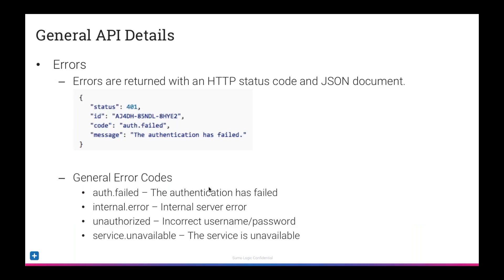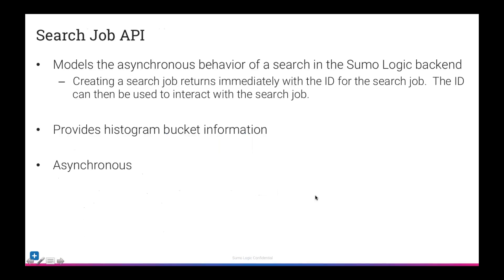Errors are usually returned with an HTTP status code and a JSON document that contains more information about what went wrong. Some of the most common errors: auth.fail means your authentication has failed — check your access ID and access key. internal.error means something has gone wrong on the server. unauthorized means you have incorrect authentication. And service unavailable means we're just not available at the moment to handle that request.